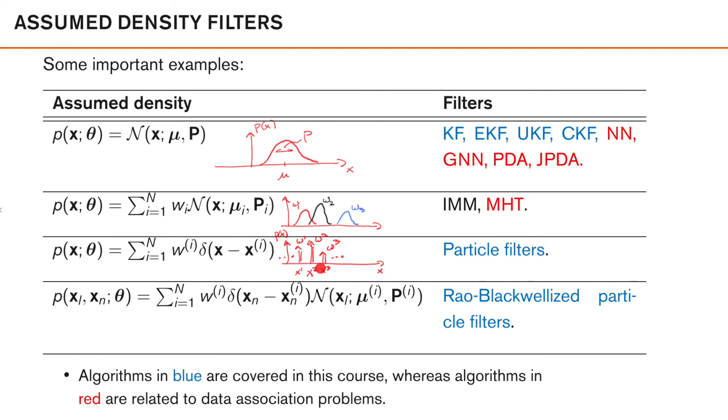We will then also look at this type of representation, where we have a mix of delta functions and Gaussian densities, and this is used in the Rao-Blackwellized particle filters. This is no way near a complete list of assumed densities that are used in filtering and object tracking, but it is a list of the more common, and at least all the different representations that we will consider in this course are covered here.